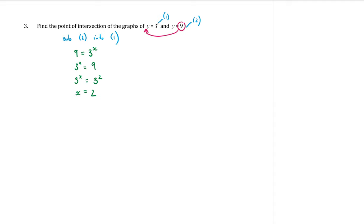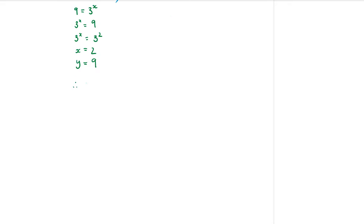We still need to find the y value. We sub our x value back into one of the equations to find the y value. If you look at equation number two, y is always equal to 9, no matter what the x value is. So that means that the point of intersection is the point 2 comma 9. That is our lesson on exponential functions.